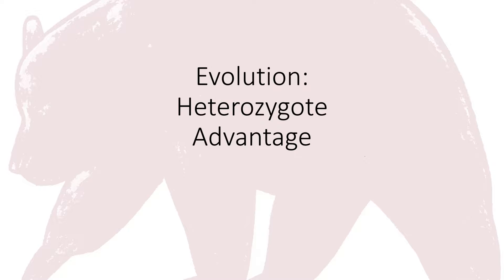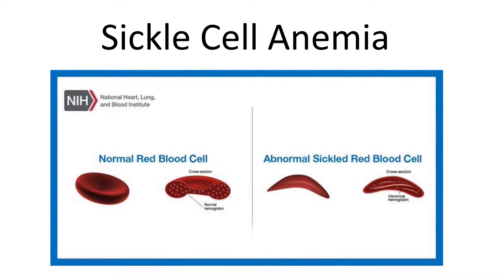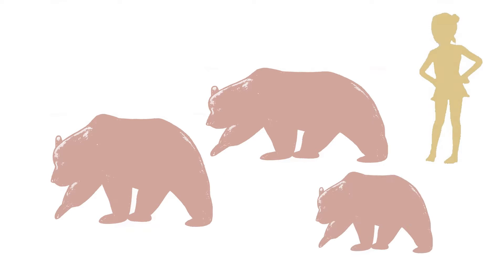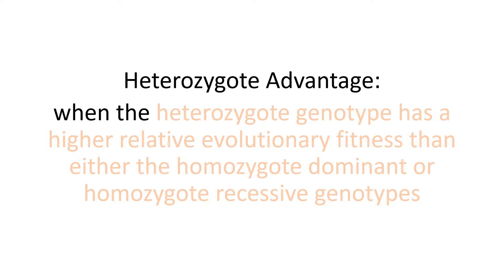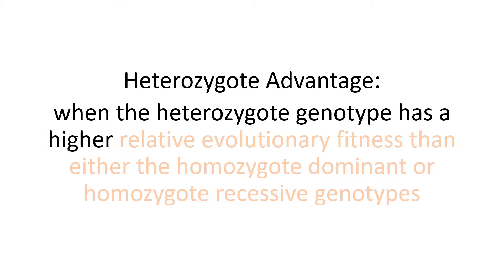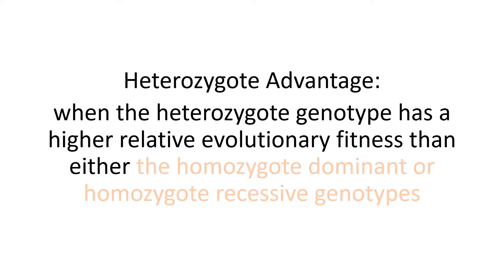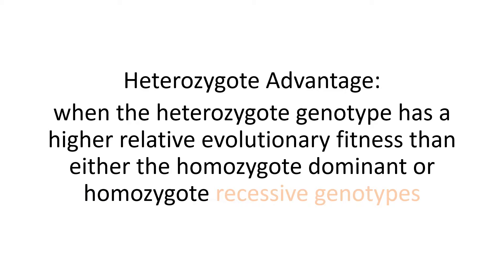We are going to talk about heterozygote advantage using the common example of sickle cell anemia and the story of Goldilocks and the three bears. Heterozygote advantage is when the heterozygote genotype has a higher relative evolutionary fitness than either the homozygote dominant or homozygote recessive genotypes.